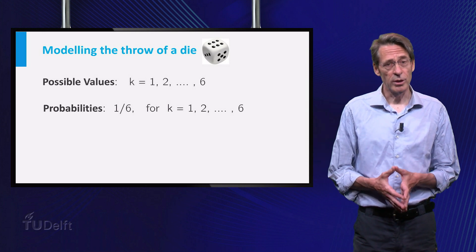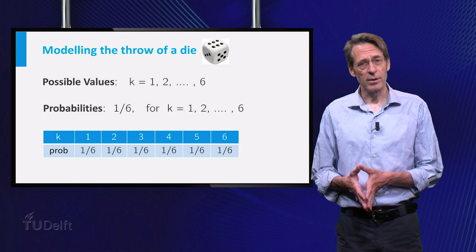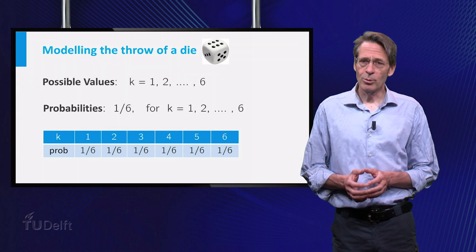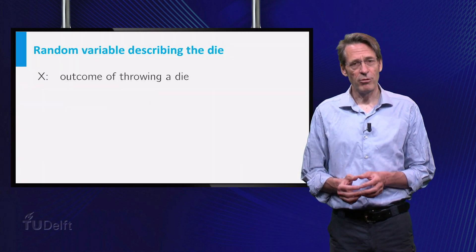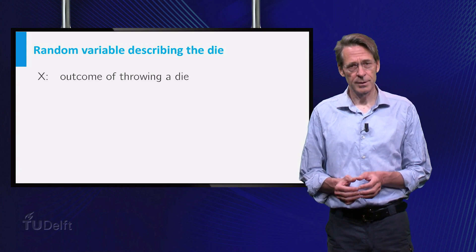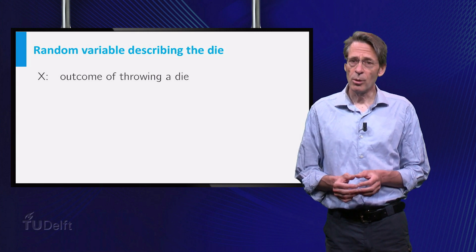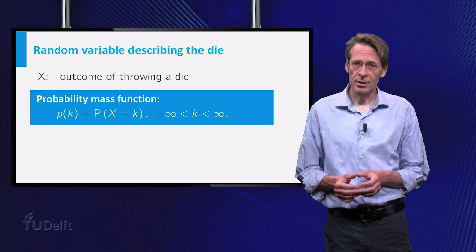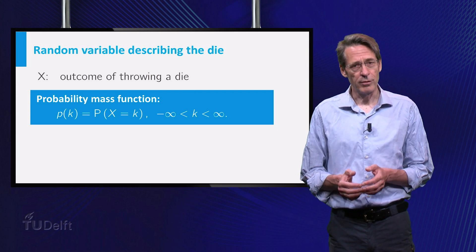The relevant information can be put in the form of a table containing the possible values together with their probabilities. It is common practice to denote random variables with capital letters. Let's call the random variable describing the behavior of a die X. One way to describe the behavior of a random variable is by the so-called probability mass function small p. By definition, p of k is the probability that the random variable X takes on the value k.